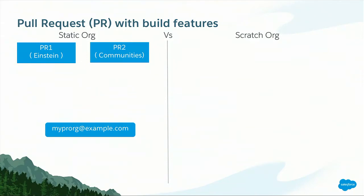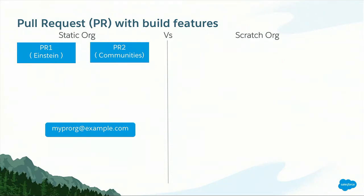I have two use cases. I have an Einstein feature branch for my development, and I also have a communities feature branch for my spike story. Using a static org, I deploy Einstein code first — the build succeeds, I test my feature branch, and the build is complete. But at this time, the communities branch is still in a waiting state. When I start deploying communities into that org, it's very likely the build will fail because I may have missed enabling communities in that org. This is a very common scenario — you may miss certain features or permissions, and because of that, the build keeps failing.